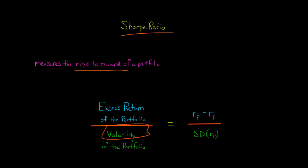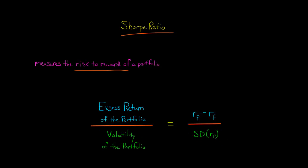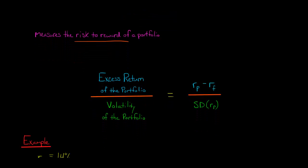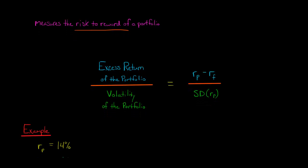Volatility is a measure of total risk, and we calculate it with the standard deviation of the expected returns of the portfolio. So the standard deviation of the returns — that's the volatility. Excess return of the portfolio divided by volatility of the portfolio gives us our Sharpe Ratio.